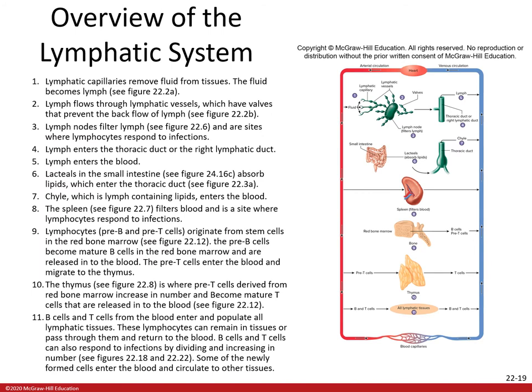This overview slide shows the lymphatic system and how things move through it — the various vessels, the various organs, as well as arterial and venous circulation. The key takeaway is that this system helps regulate fluid levels in various tissues and provides protection against pathogens.